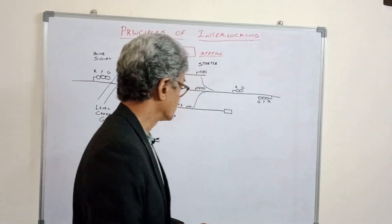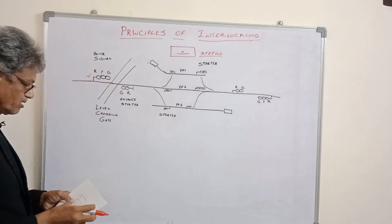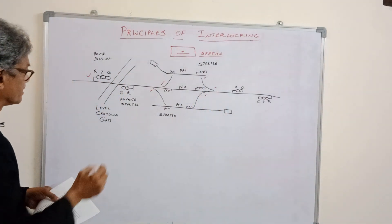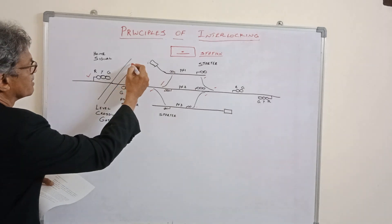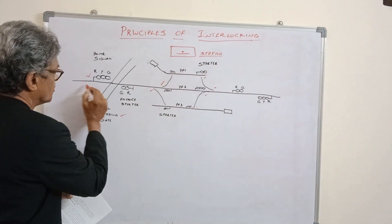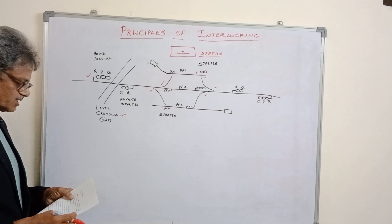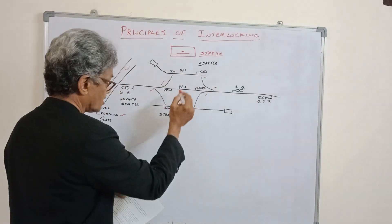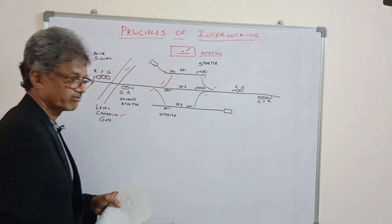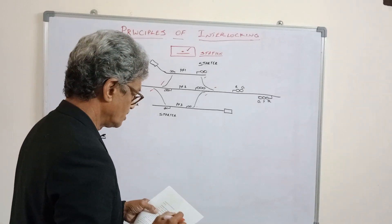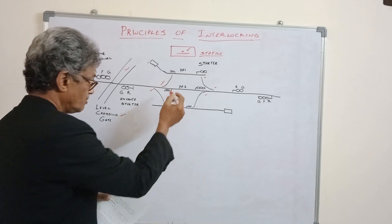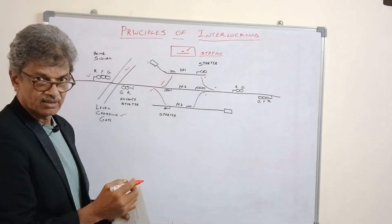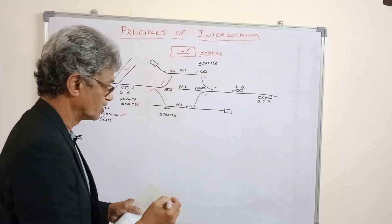What is interlocking? Interlocking means an arrangement of signals, points, and other appliances — just like level crossing gates, where road movements are controlled. All these things — signals, level crossing gates, and points — are operated from the station or relay room. In earlier days it was operated through mechanical gears only; later through mechanical as well as electrical dual systems. Nowadays it is mostly operated electrically only.